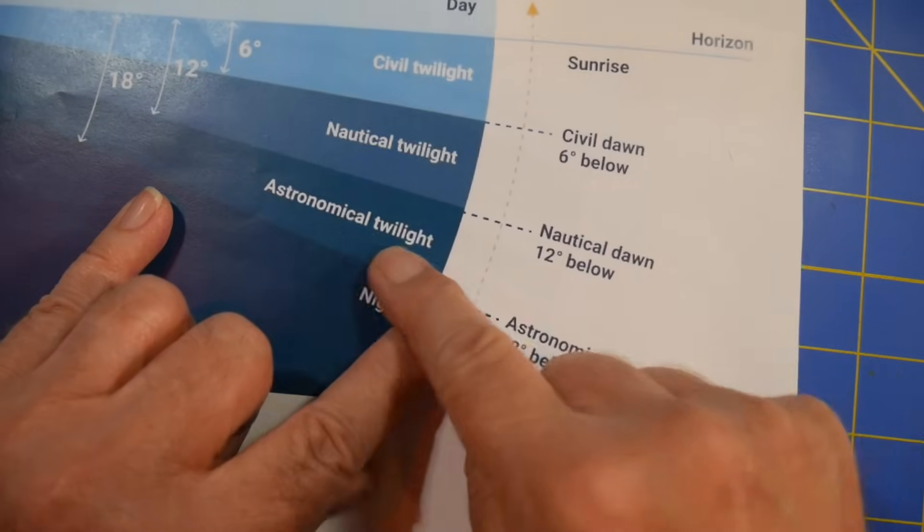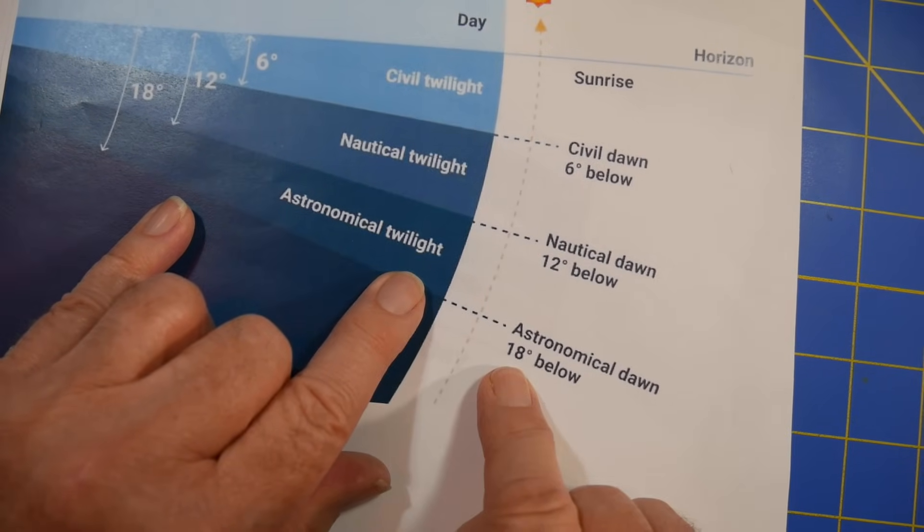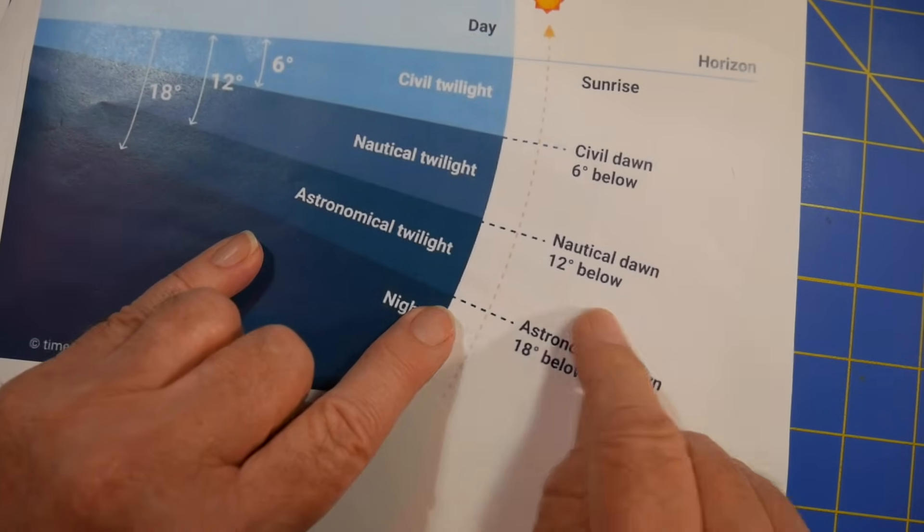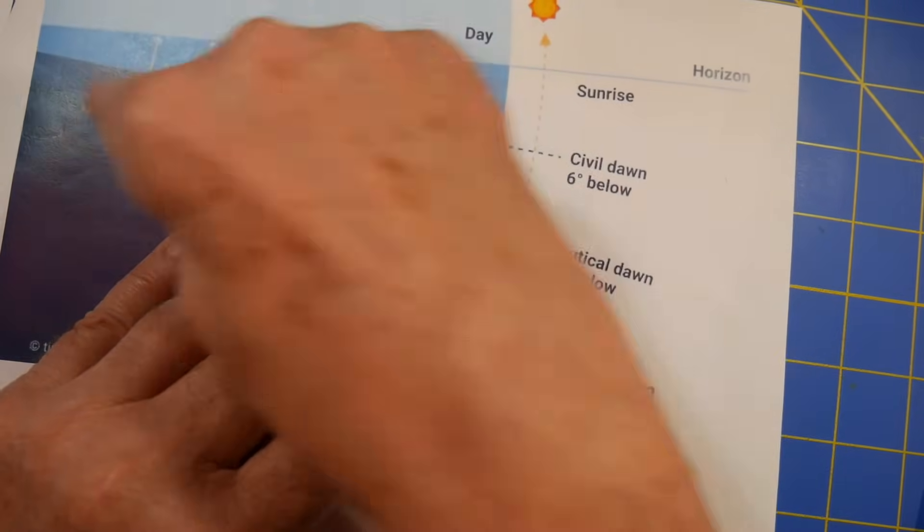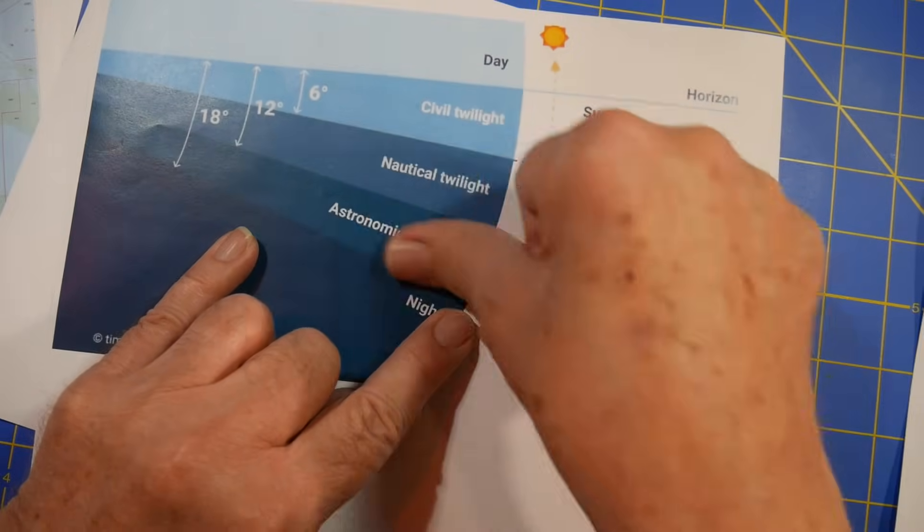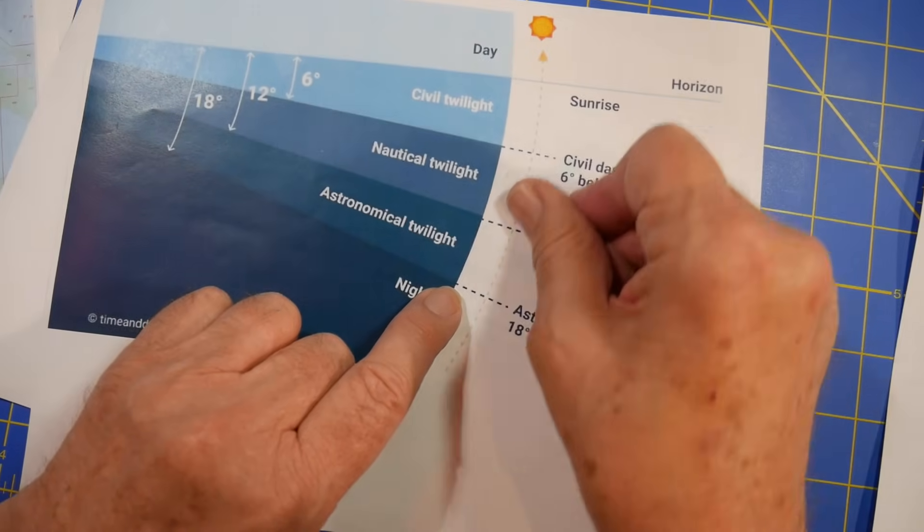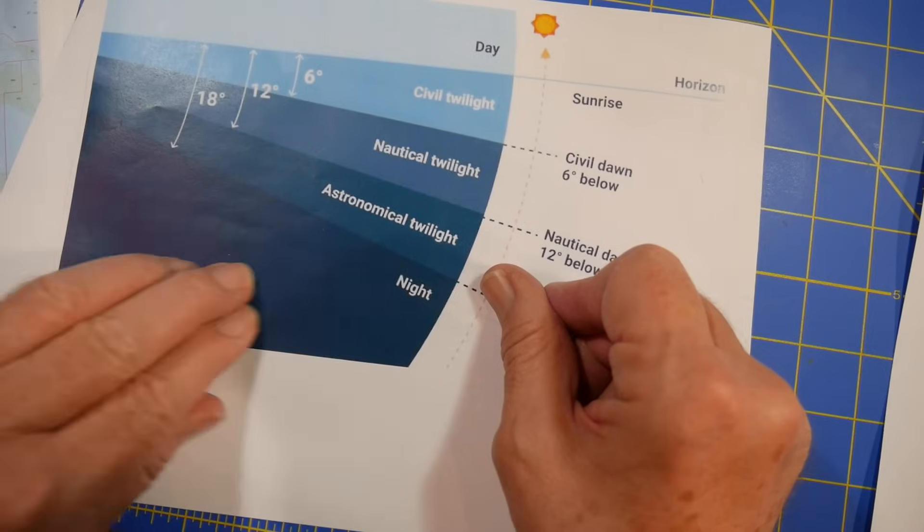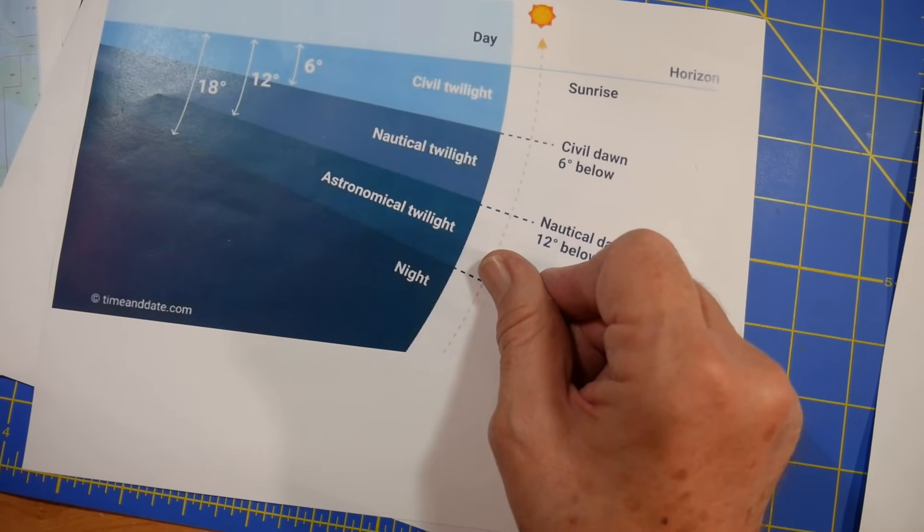Now, the next one down is called astronomical twilight and that goes all the way to 18 degrees below the horizon. Now, what astronomical twilight is, is you still get some of the sun's light. So, fainter stars are not visible till you actually get the sun all the way down 18 degrees below the horizon and it's then night. And you can see the stars very clearly without interference from the sun.